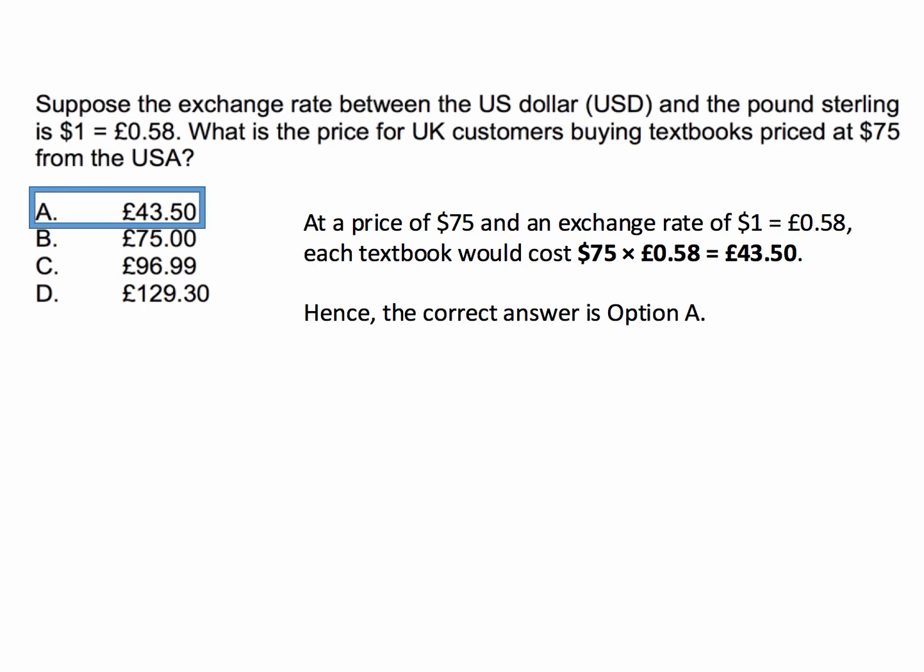Sometimes the question will ask you to discuss the effect of a fall in the exchange rate. For example, if one pound buys fewer dollars, then the UK price of that American textbook would go up. But if the pound strengthened against the dollar — for example, if you had to give up only 55p to buy a dollar — then that $75 US textbook would be cheaper when priced in sterling.